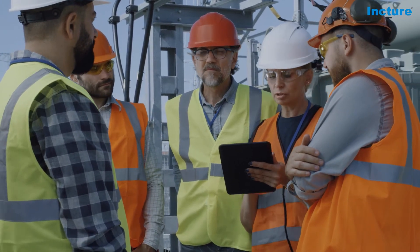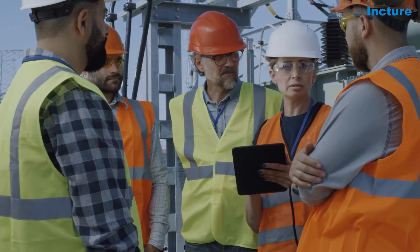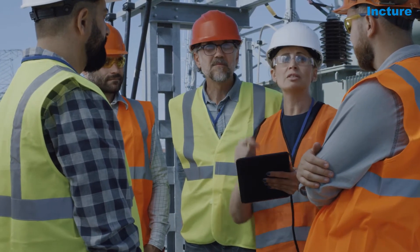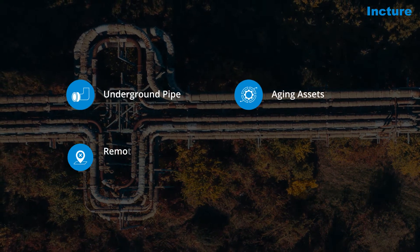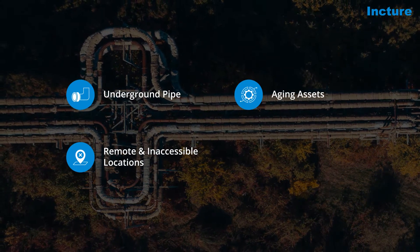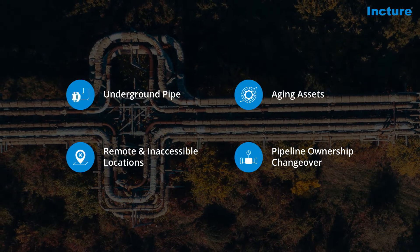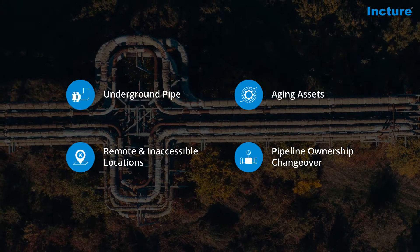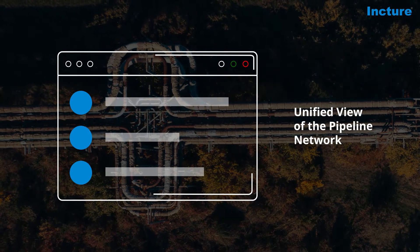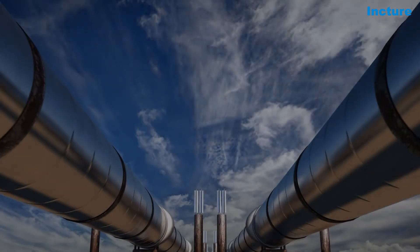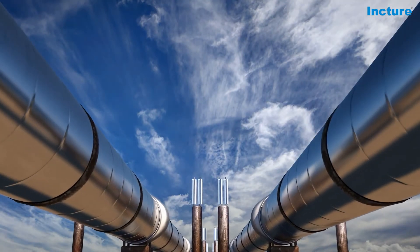While ensuring pipeline integrity and reliability for spill-proof operations, complexities like underground pipe aging assets, remote and inaccessible locations, and pipeline ownership changeover had resulted in a major challenge to digitize information and bring a unified view of the pipeline network. The pipelines must be operated at optimal capacity with the safest options.